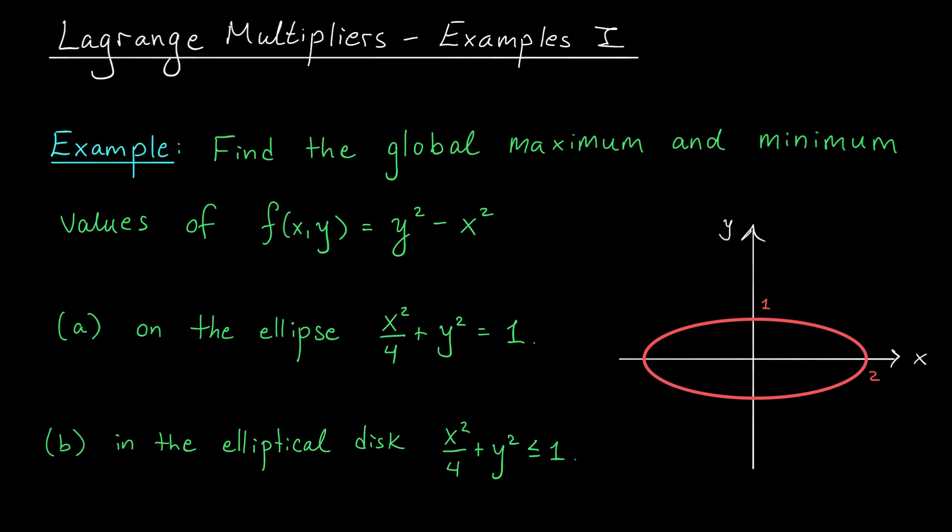Here, we're looking for the global max and min of the function f(x,y) equals y squared minus x squared. First, we're going to be looking along this elliptical constraint curve, x squared over 4 plus y squared equals 1.